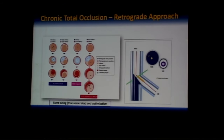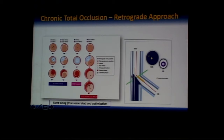Additionally, in the retrograde approach, when the proximal cap is at a major side branch or in the aorto-ostial location, coming through the sub-intimal space can cause inadvertent closure of the side branch or a major aorto-ostial dissection. By identifying the exact position of the retrograde wire, IVUS helps avoid these major complications.